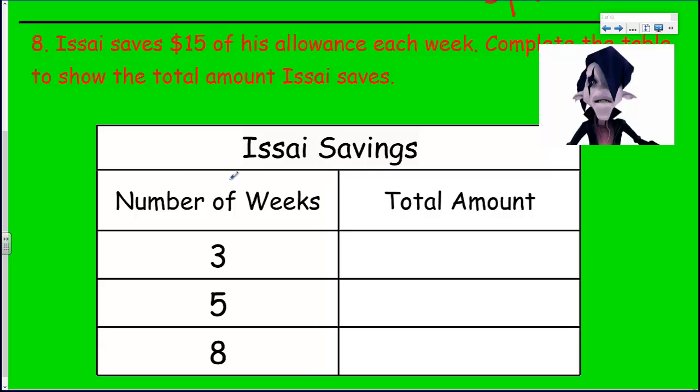The next problem says, Isai saves $15 of his allowance each week. Oh, my goodness, he's making some good money there. It says that, complete the table to show the total amount Isai saves. The total amount, keywords. And, we're going to finish this table, $15 of each week, and it tells us the number of weeks. It's pretty straightforward, like what we did in the last problem.